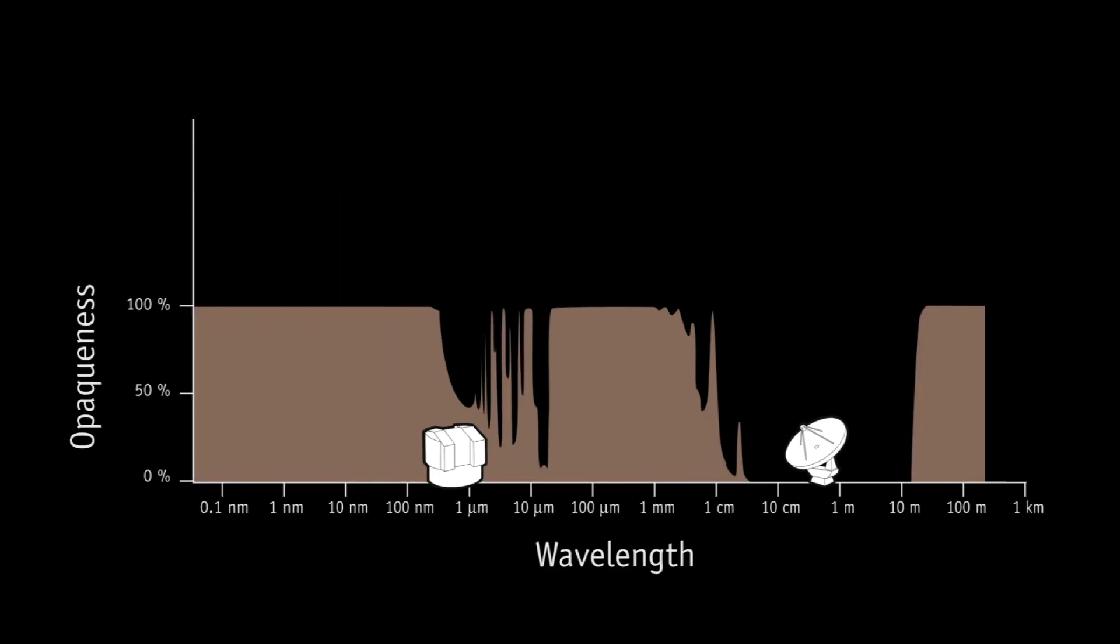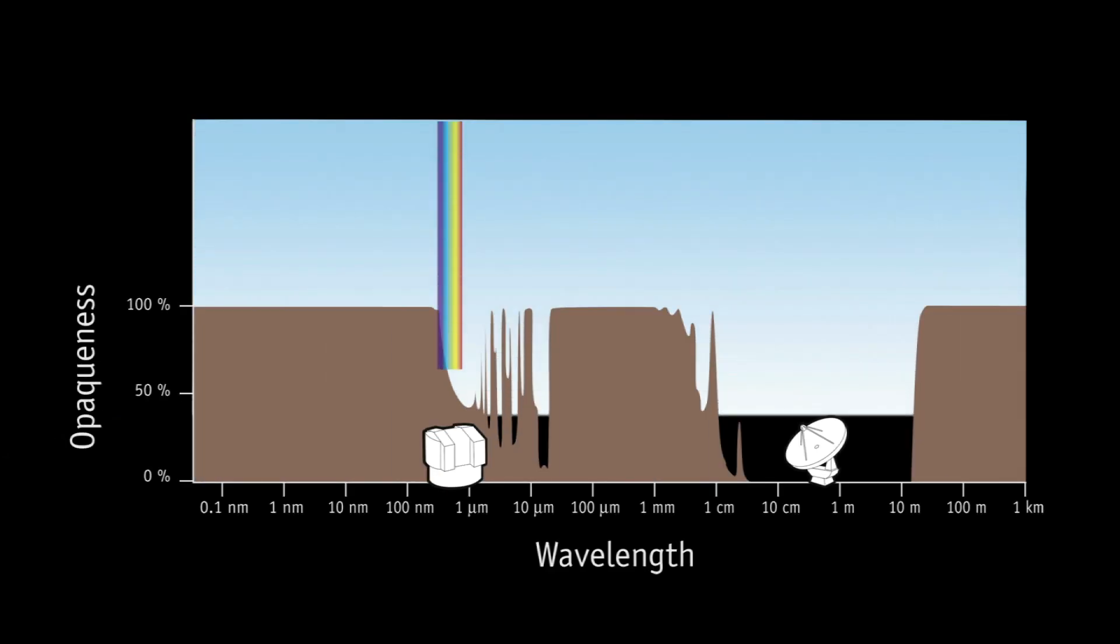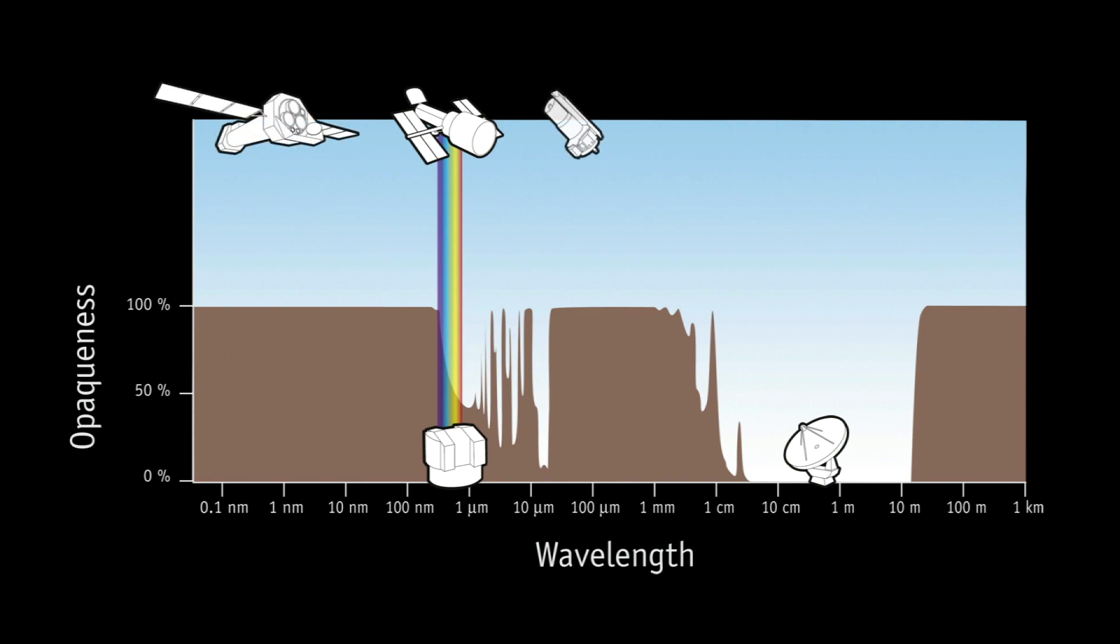On the other hand, the atmosphere blocks certain wavelengths of light. Only space telescopes, like Hubble, that fly above the atmosphere, can access the ultraviolet and infrared parts of the spectrum, which are invisible from the ground.